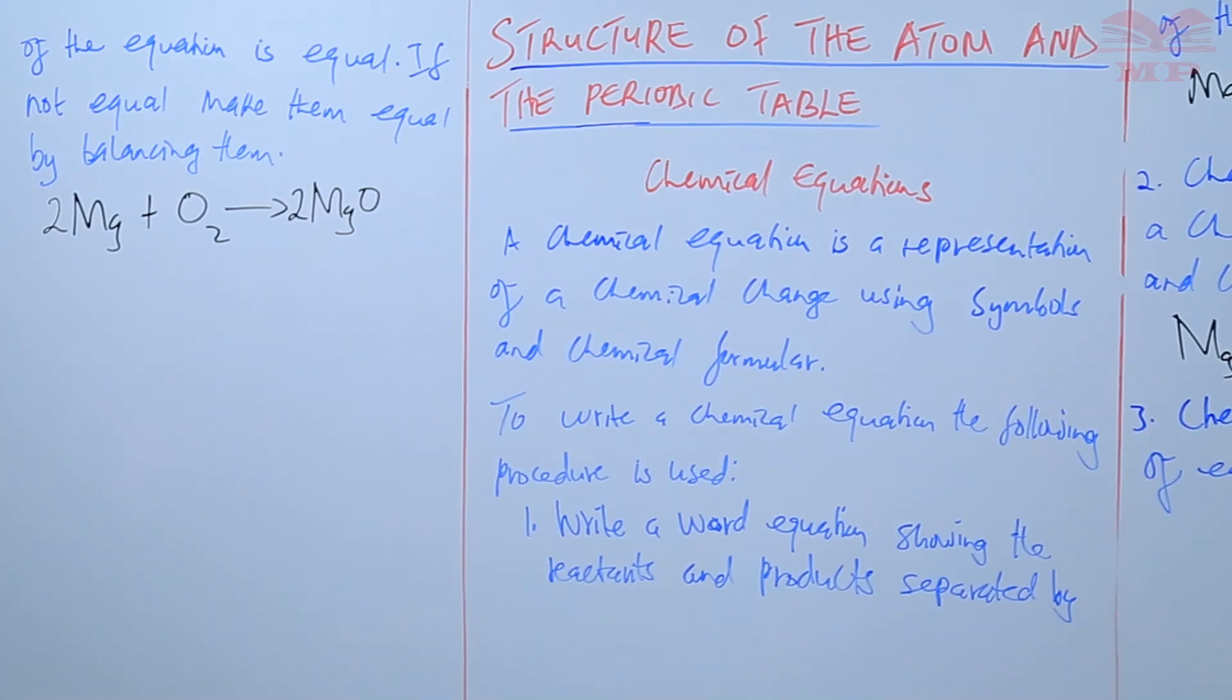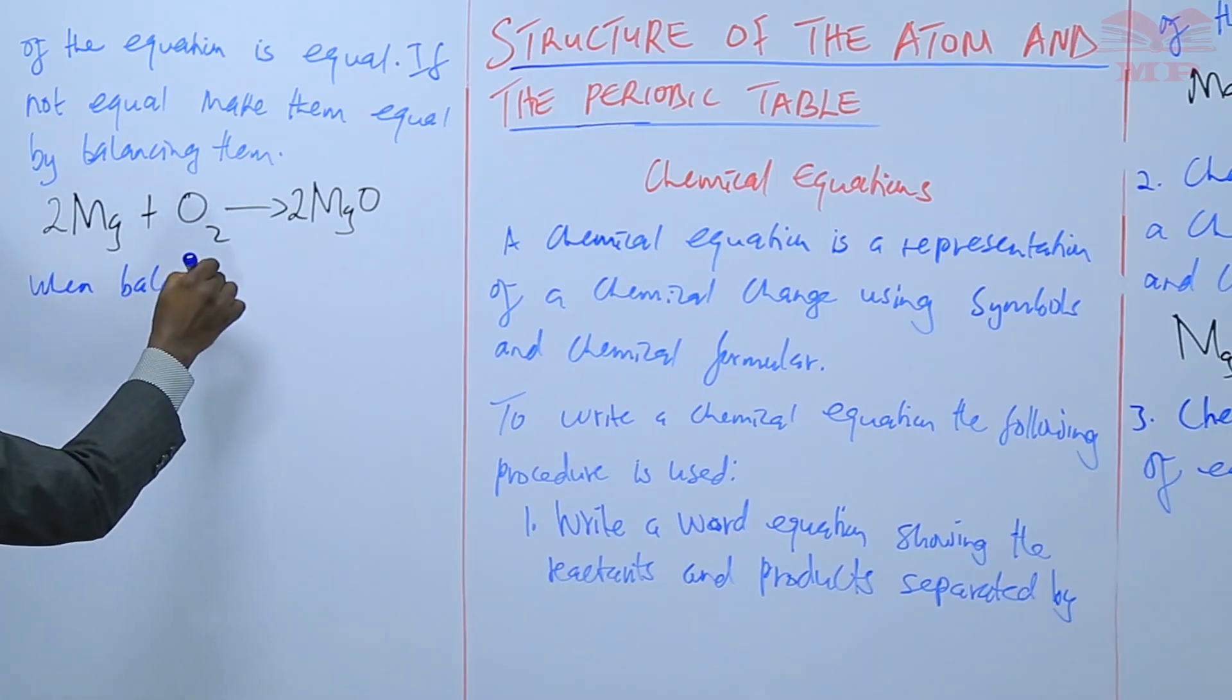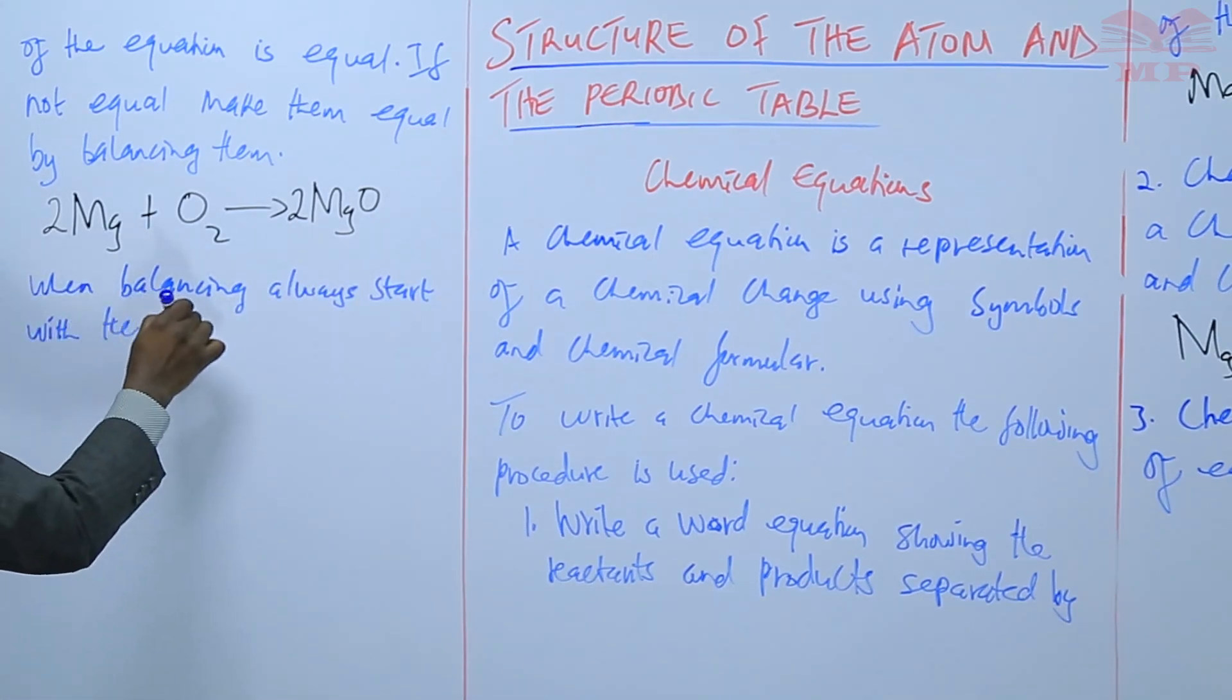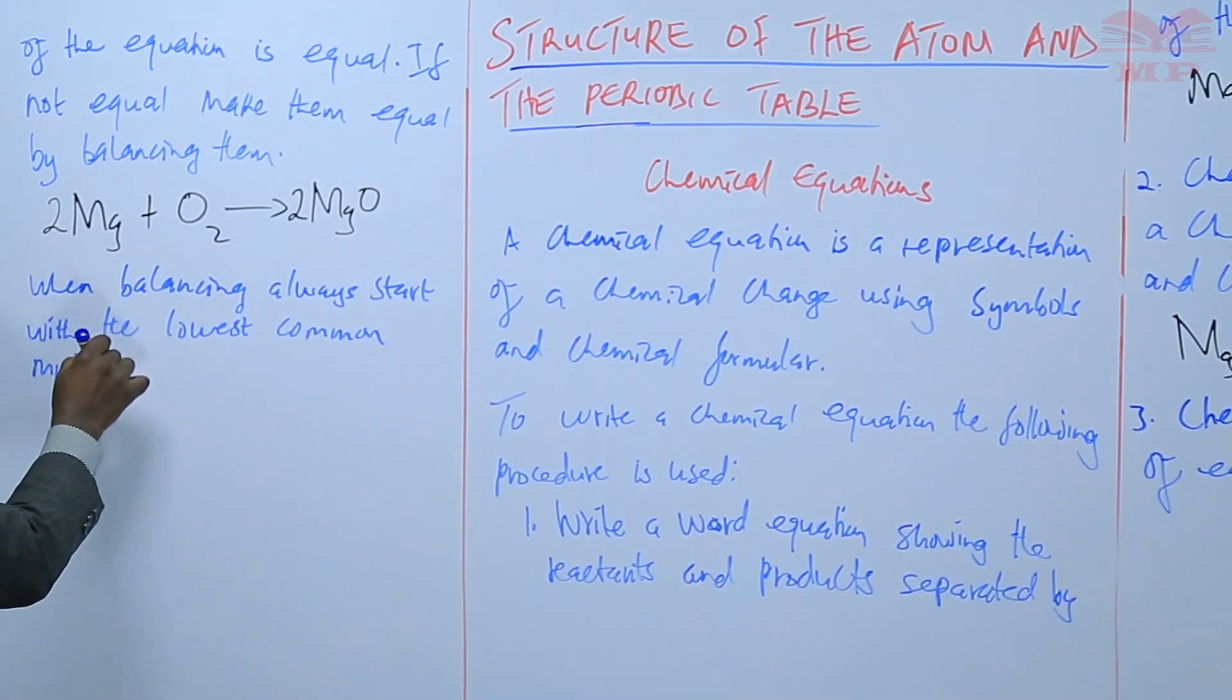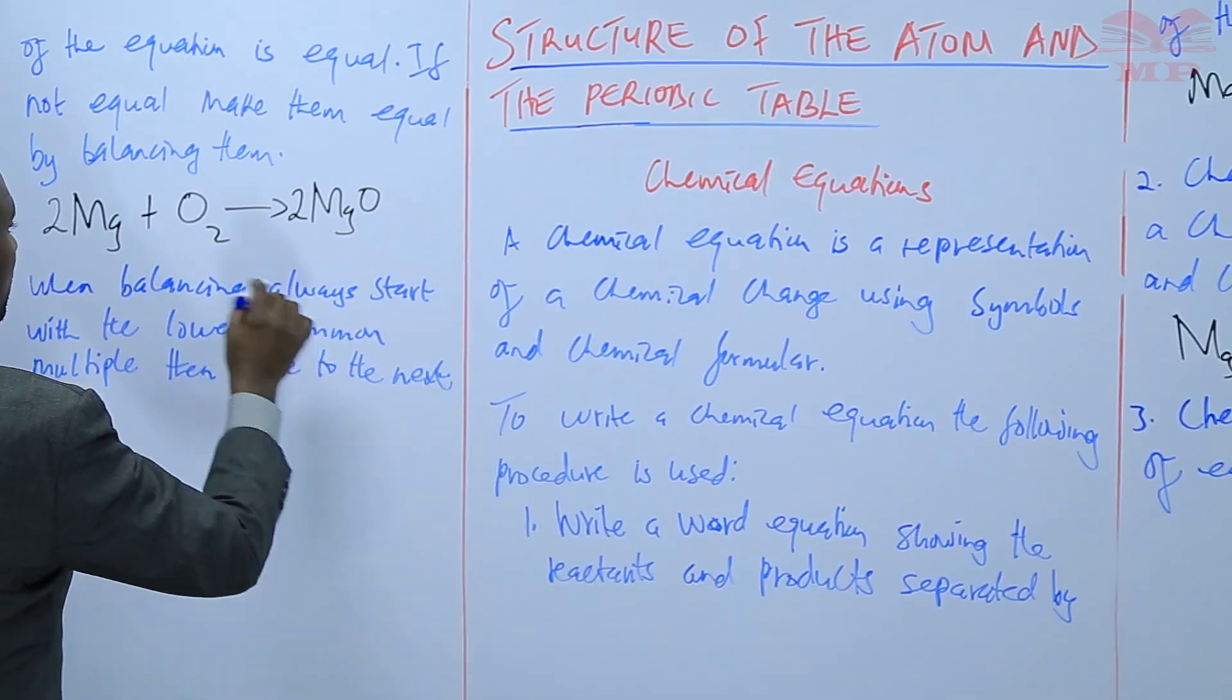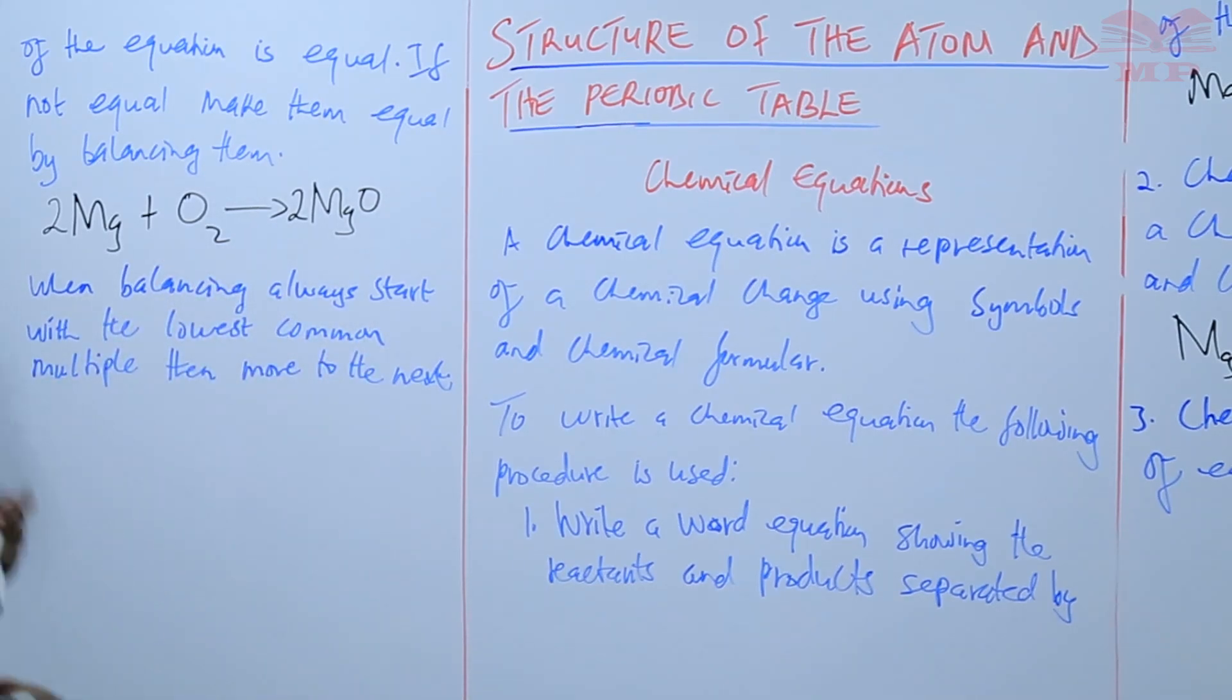Then the next step after we have balanced - but first, before we go to the next step, we need to mention that when balancing, always start with the lowest common multiple, then move on to the next. So if, for example, 2 does not balance, you go to 3. If 3 does not balance, you go to 4. But you start with the lowest.